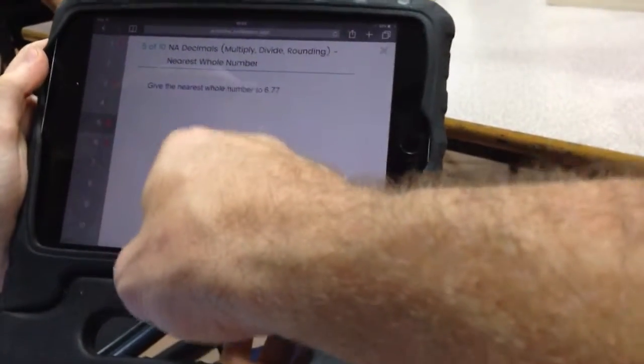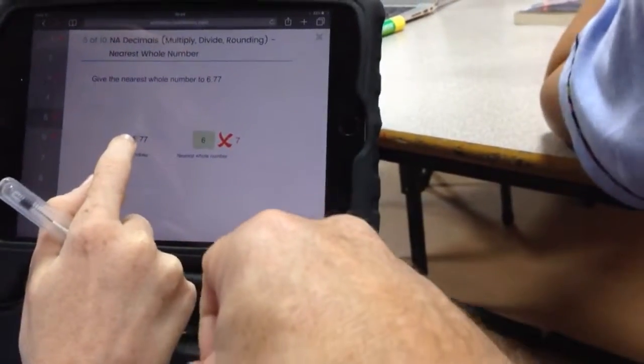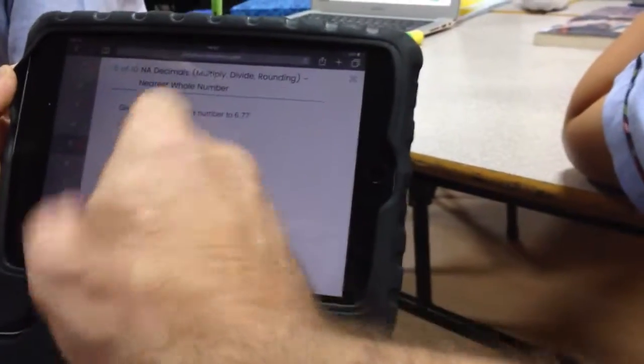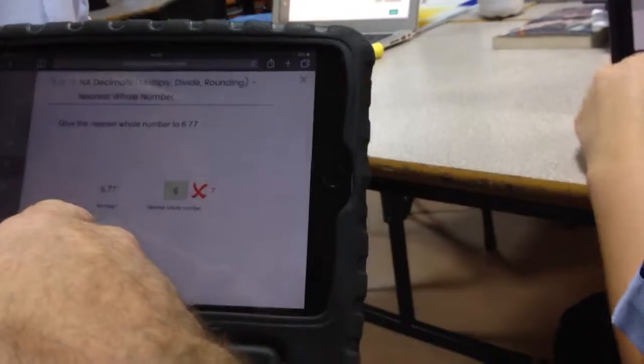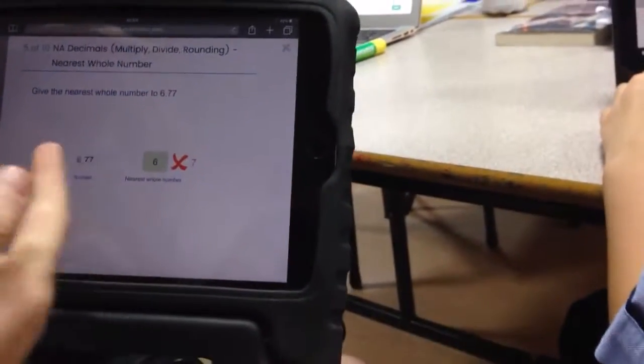And this one? This one saying 6 and 77 hundredths. Oh, okay. So you have to try making it as close as you can to the next number? Yeah, so the whole number is like having a whole pizza. You're having 6 whole pizzas and there's 77 slices left out of 100. So all you're doing is look at the whole number first and then look at the very next place value which is in the tenths.